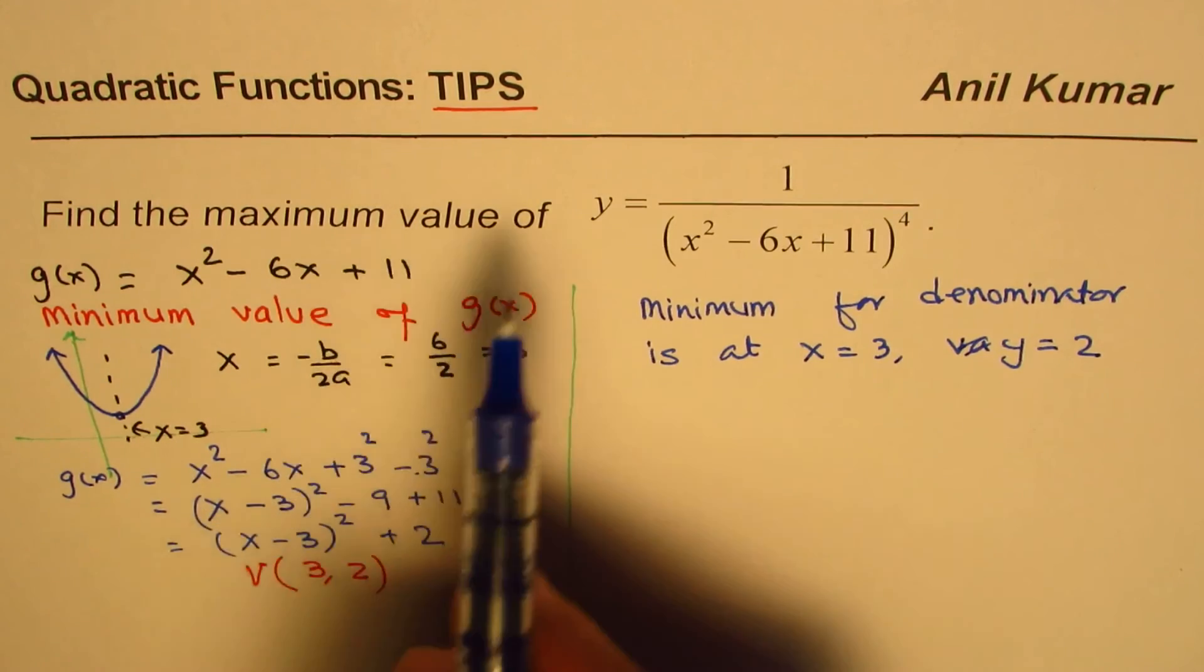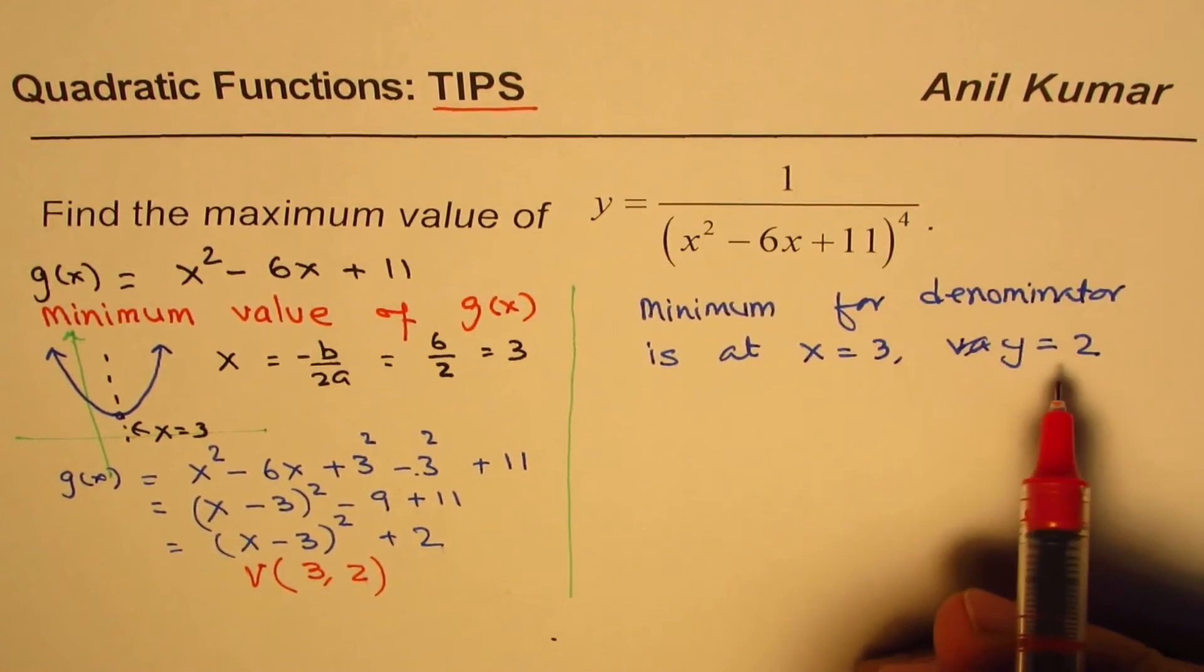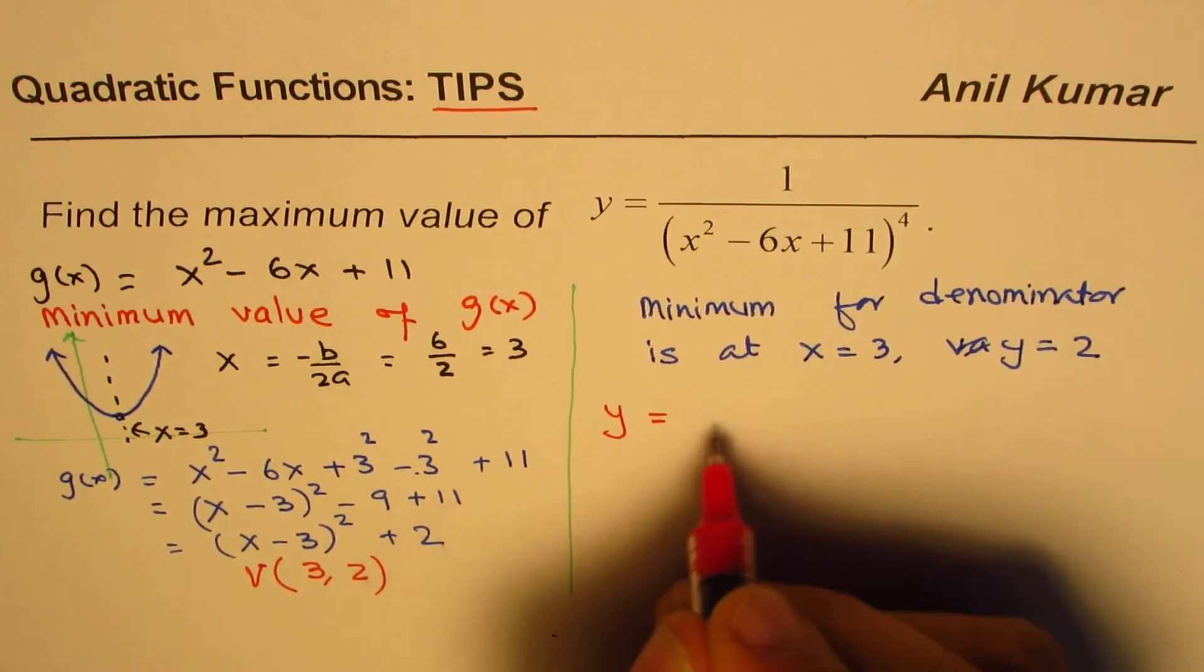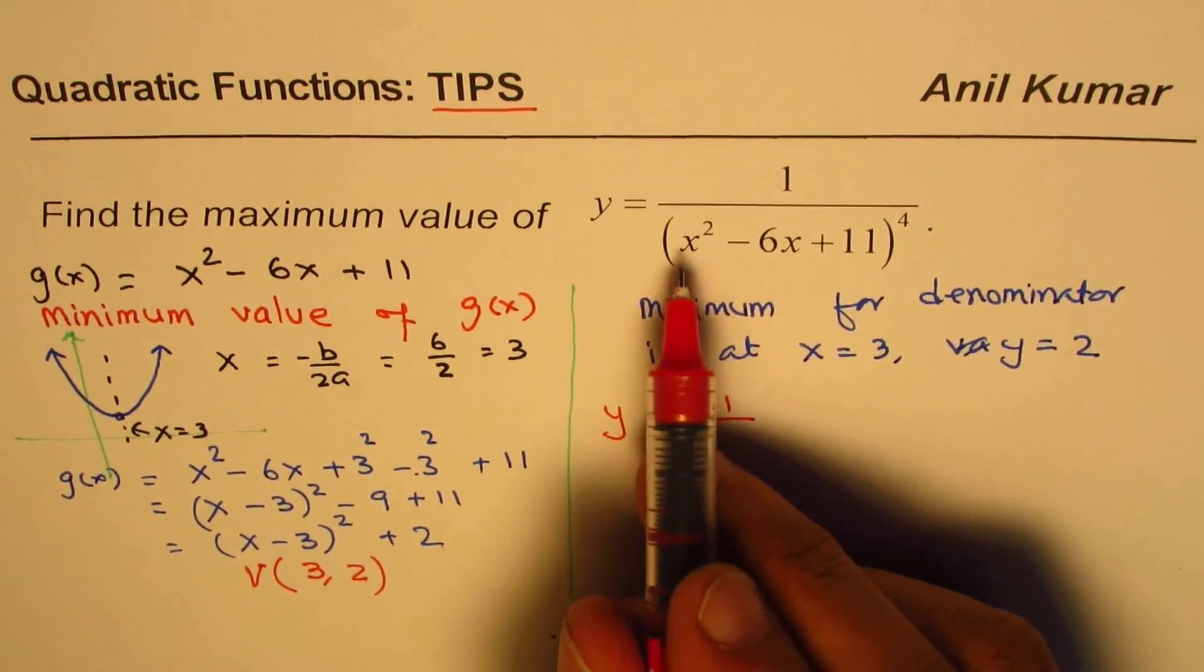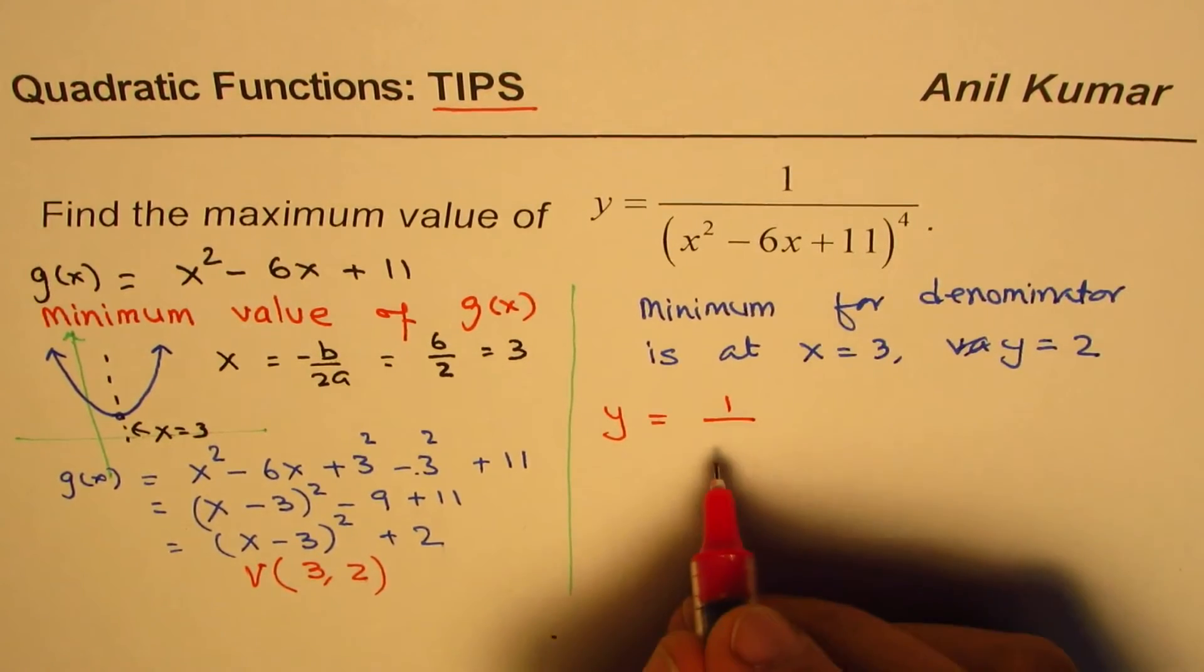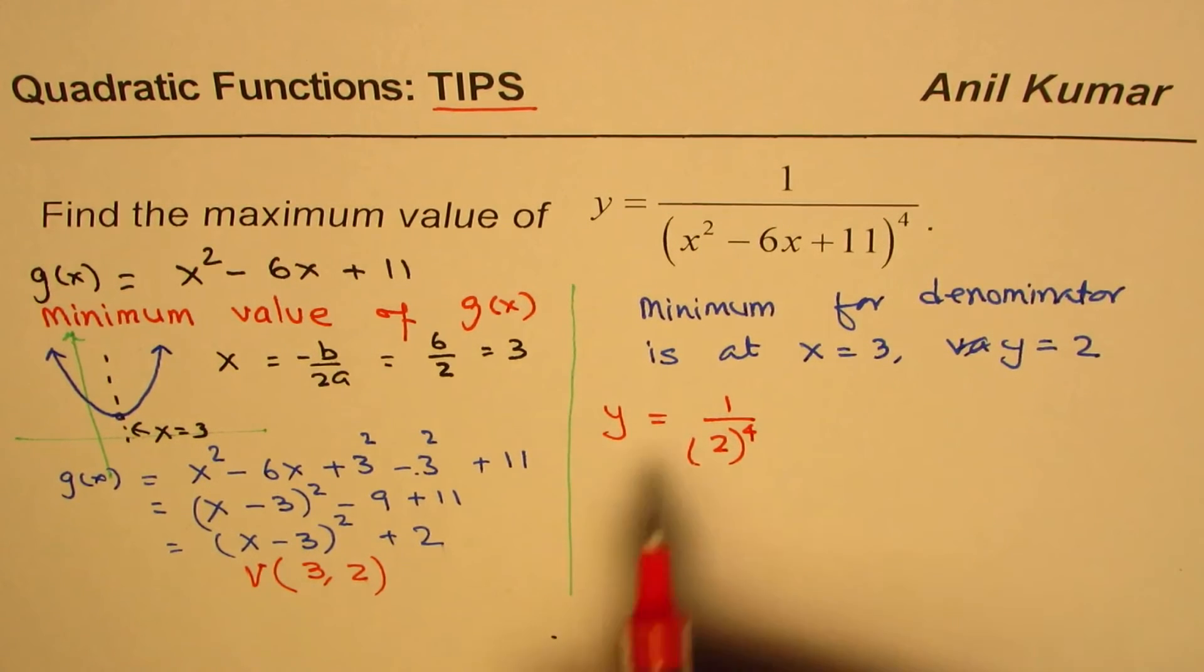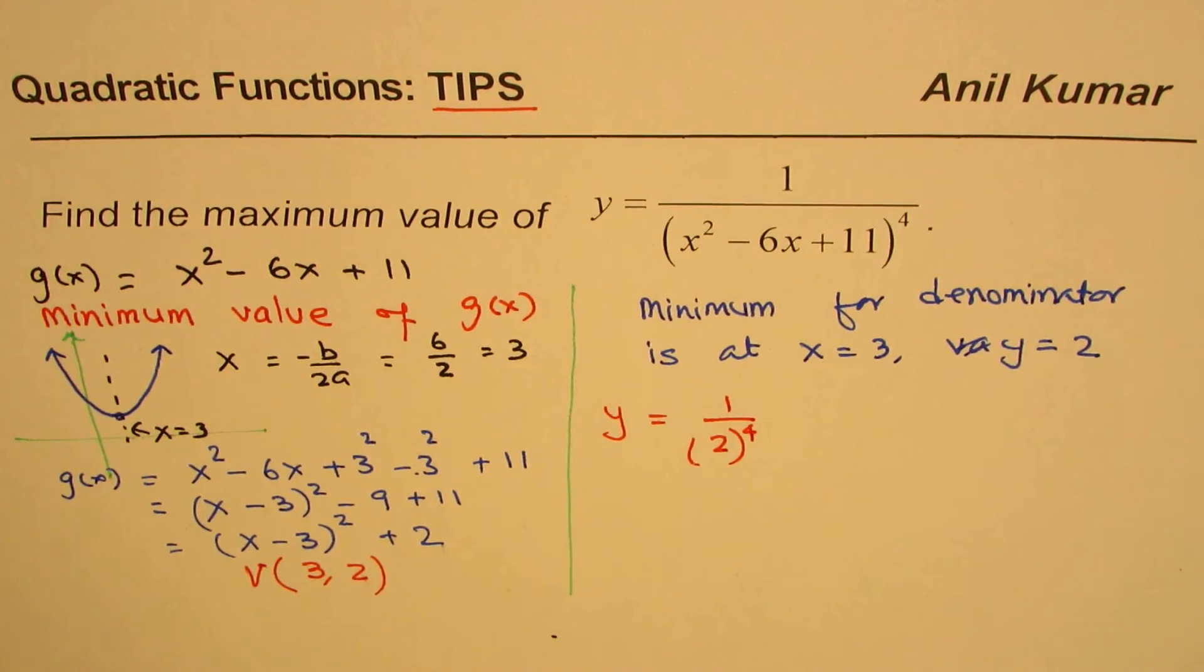We need to find maximum value for this function. So, therefore, what we can do is, we can substitute 2 here in the denominator. So, we get y equals to 1 over 2. Or, you could substitute 3. When you substitute 3, you'll get 2. So, we'll substitute 2 to the power of 4. Do you get an idea? So, that becomes the maximum value for this particular function, which is reciprocal of your quadratic to the power of 4.